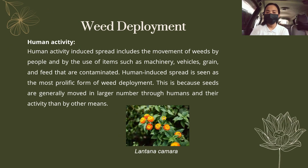The third mechanism of weed deployment is by human activity. Human activity-induced spread includes the movement of weeds by people and through the use of items such as machinery, vehicles, grain, and feed that are contaminated. Human-induced spread is seen as the most prolific form of weed deployment, because seeds are generally moved in larger numbers through human activity than by other means.